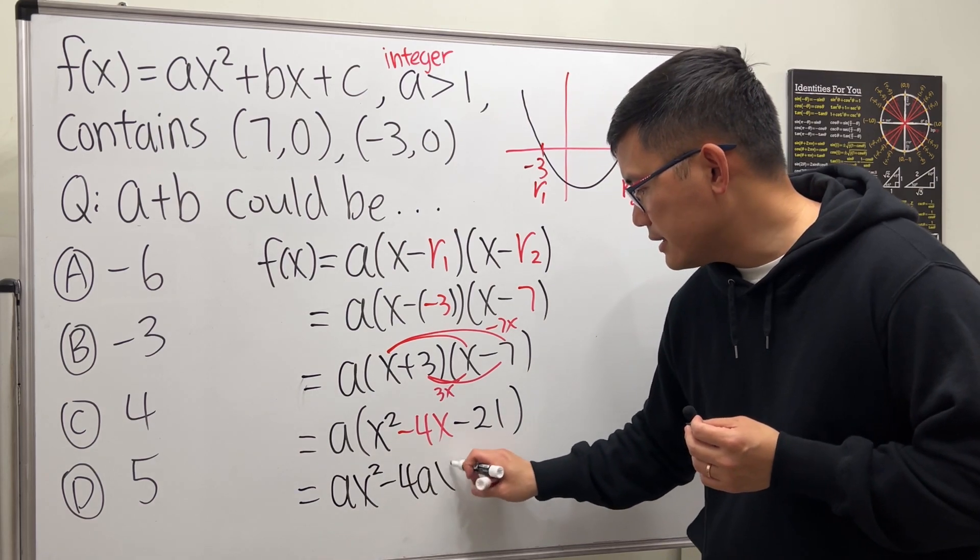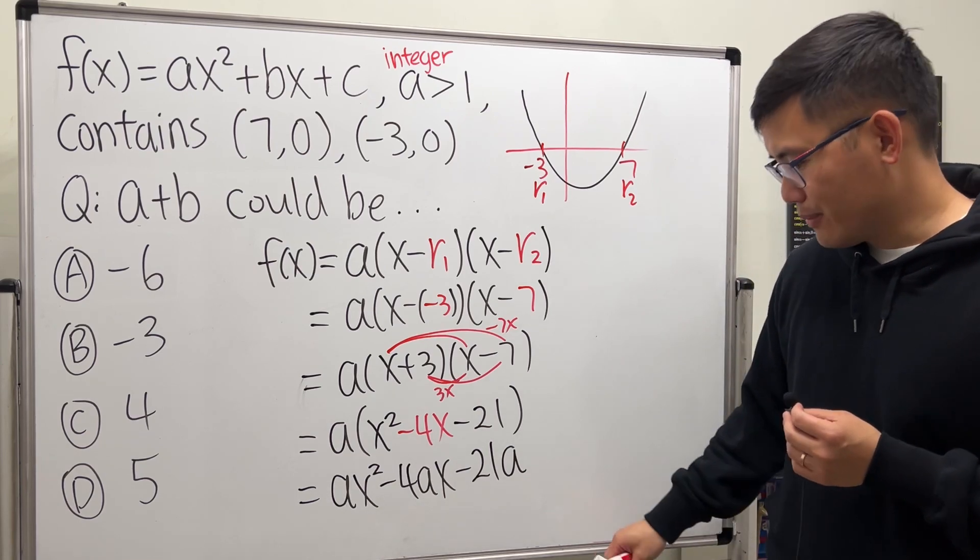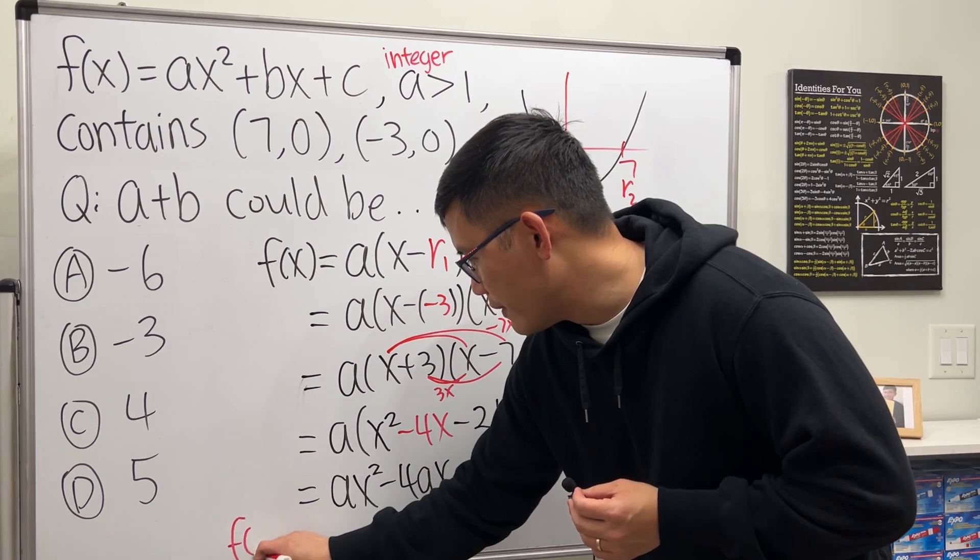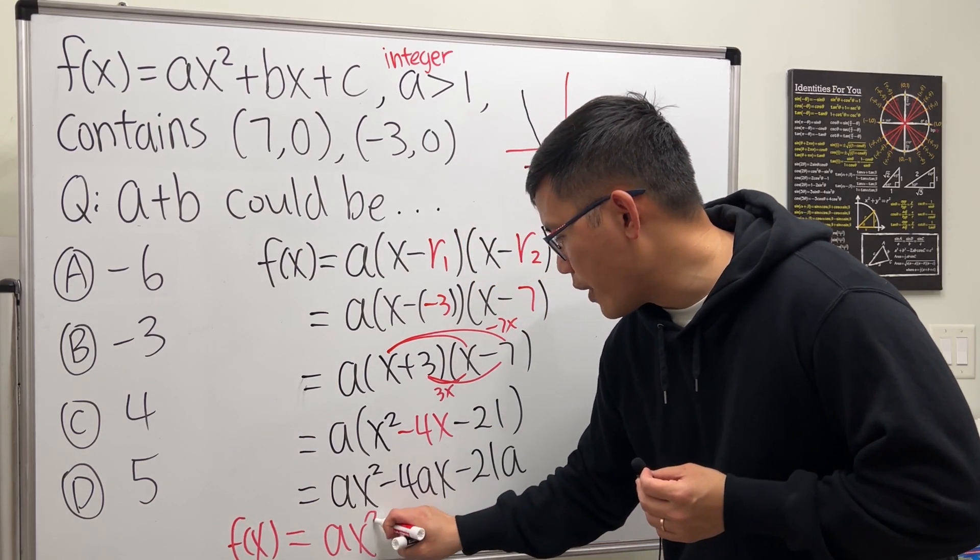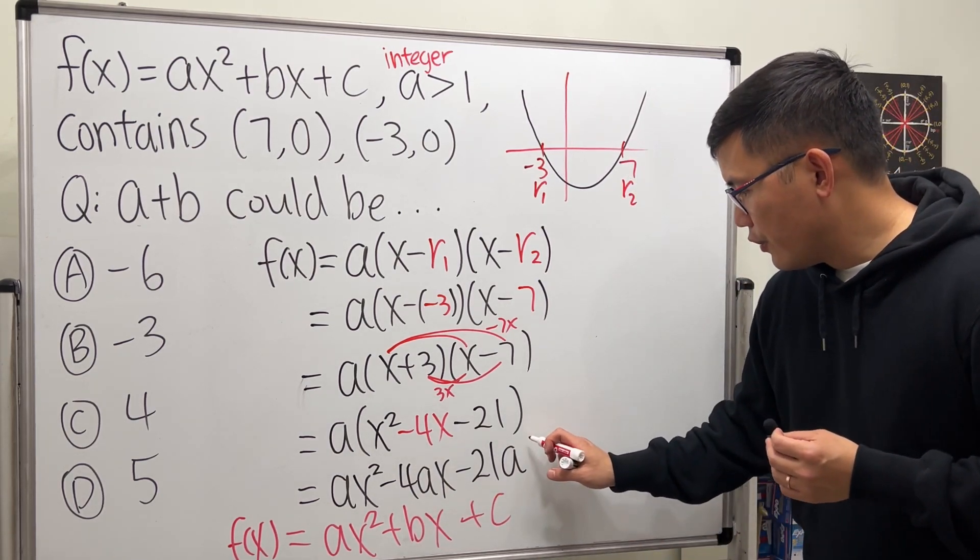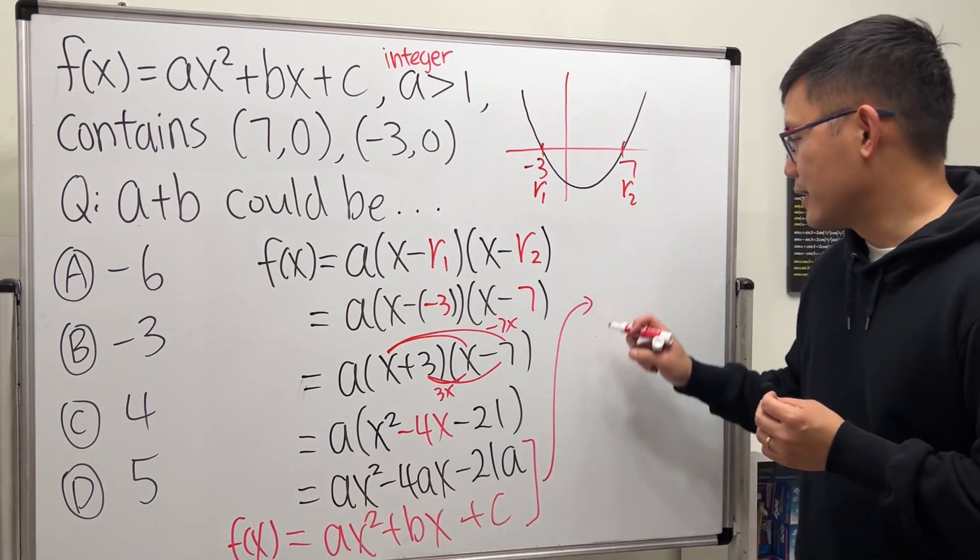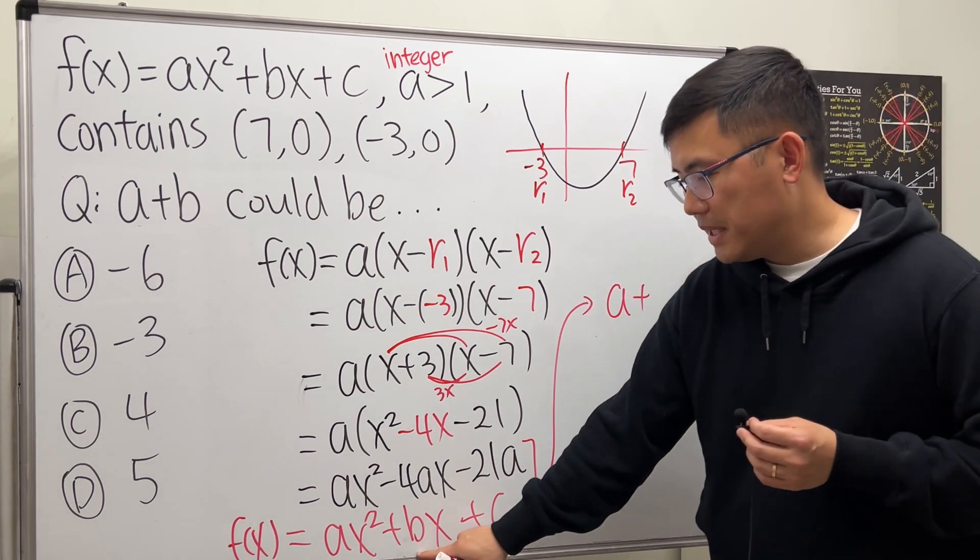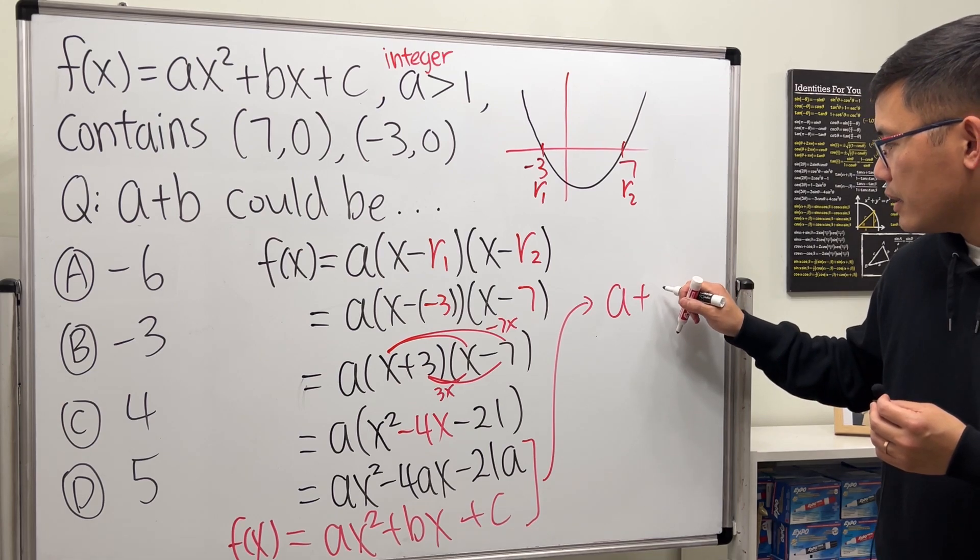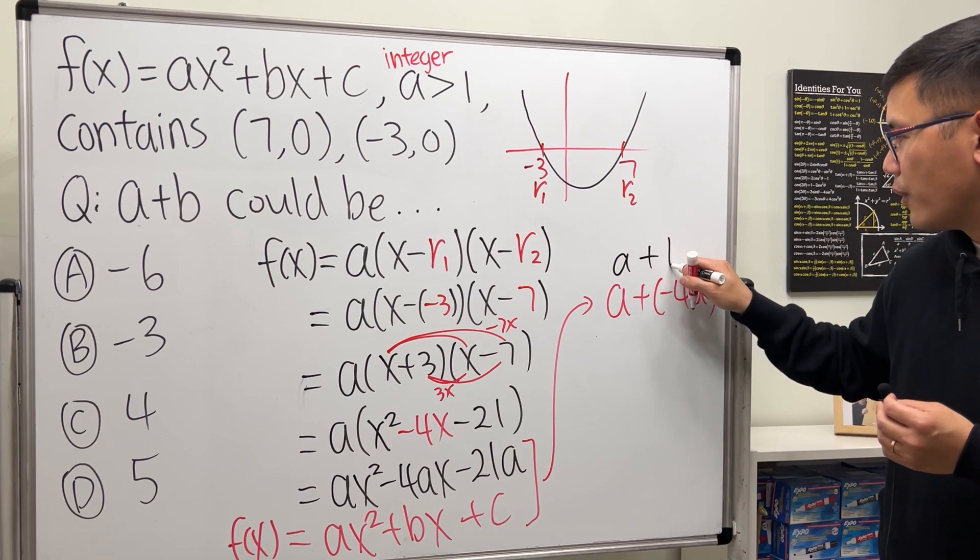Now remember our original equation is f(x)=ax²+bx+c. From these two you will tell us that a is just a, that's good. Plus b is actually -4a, so we just have to do -4a right here. So this is exactly what we're looking for.